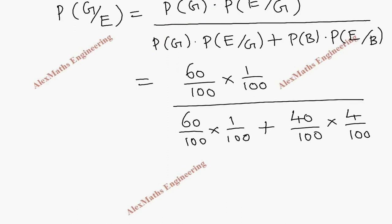So 4 divided by 100. We can cancel all the common terms which is present in every term.